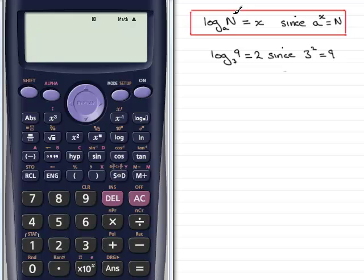The log of any number n in a particular base a was equal to x, and that's because a to the power x equaled n.